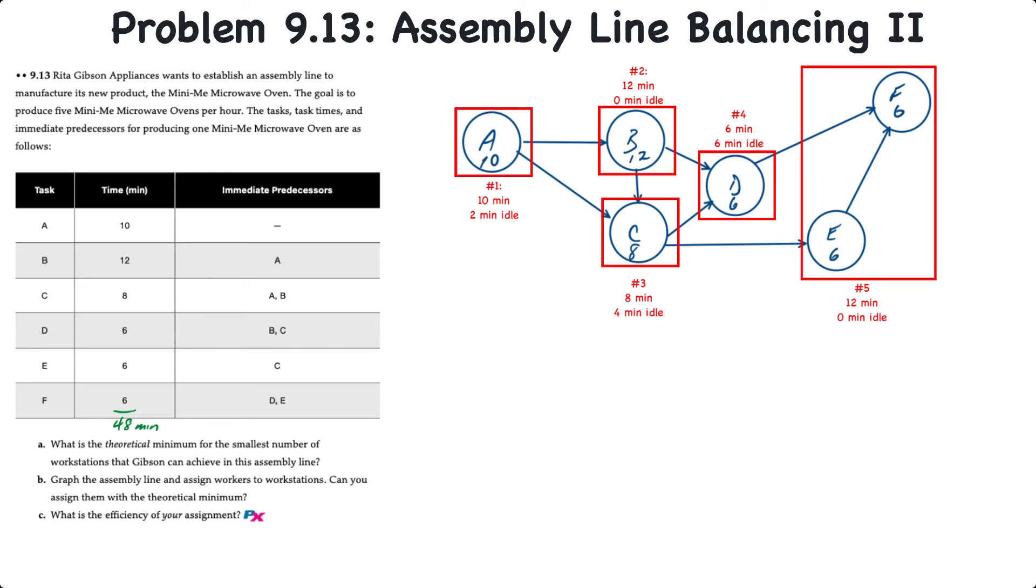If we want to calculate our theoretical efficiency, the formula for that is the sum of the task times divided by the actual number of workstations times the cycle time. Here we have the sum of the task times to be 48 minutes, we've balanced our line into 5 workstations, and the cycle time is 12 minutes. So that's 48 divided by 60 or 80% efficiency.